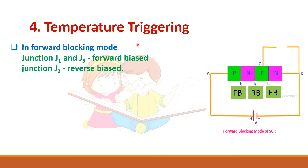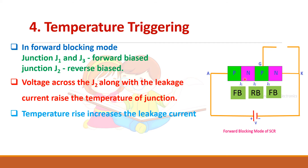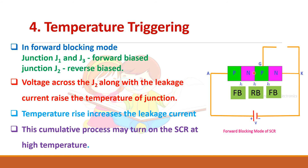In the temperature triggering method, the middle junction is reverse biased and some leakage current flows. Due to this leakage current, the temperature of the junction increases, which in turn increases the current further. This increase in current again increases the temperature. This process continues and at one point it may turn on the device.